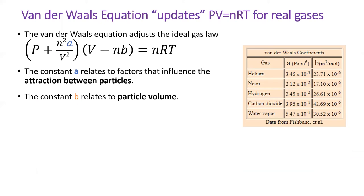Coefficient A quantifies gas particle stickiness. Coefficient B quantifies gas particle volume. You will not need to memorize the van der Waals equation — it's just a fun taste of the wild world of physical chemistry.